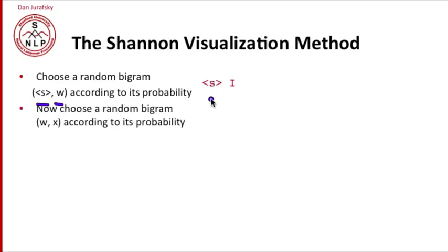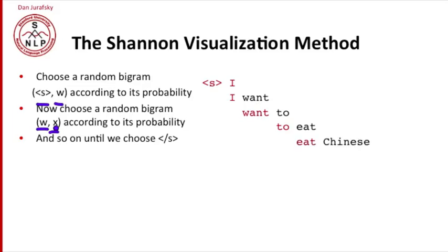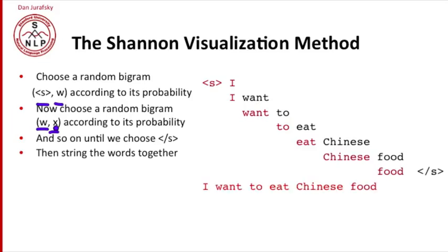Now we choose another random bigram that starts with that word we just generated, and whose next word is chosen according to its probability. So now we pick want, so now we've picked I want. And now we go on until we happen to choose the end of sentence. So I want to eat Chinese food, end of sentence. So now we string these words together and we've generated a sentence.